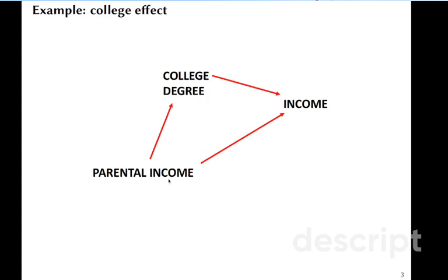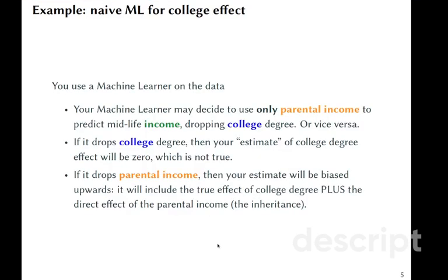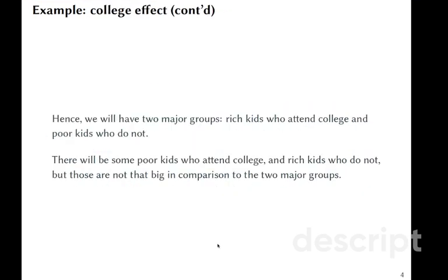Hence, there can be different reasons for how parental income is going to affect the probability that the person is going to college. But in the end, we may end up with just two groups: rich kids who attended college and poor kids who did not. This kind of situation is going to create lots of correlation between college degree and the socioeconomic background of the person in his childhood.